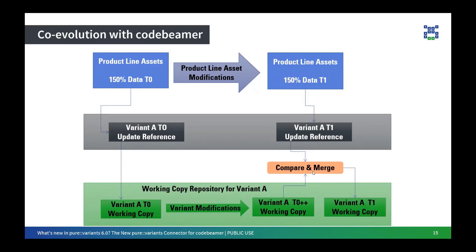This is the concept of co-evolution with CodeBeamer. It is helpful for changes that need to be done for a specific variant alone — you can just make changes in that specific variant. And if you are making changes in your product line, all of these changes can be merged together to achieve a new variant copy. This is a capability of Pure Variants that goes beyond ISO 26580.